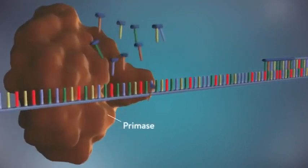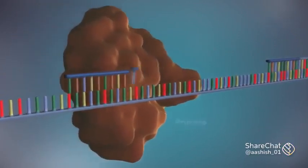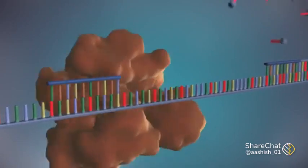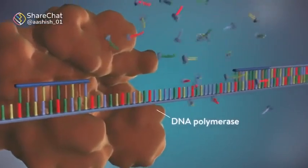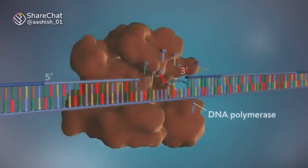The next primer is then added further down the lagging strand. Another Okazaki fragment is then made and the process is repeated again.